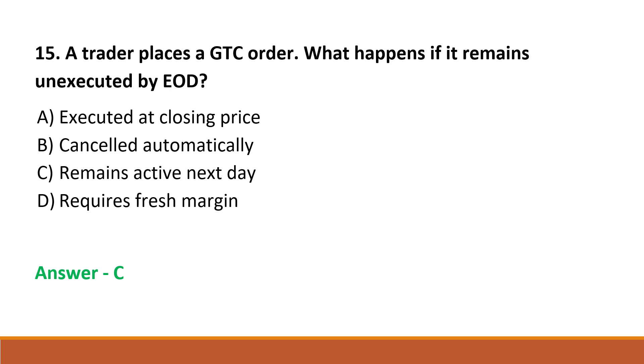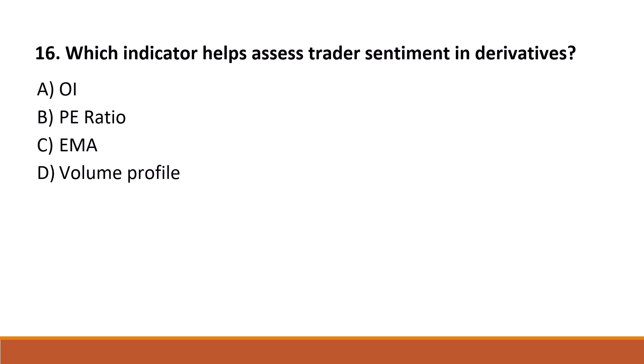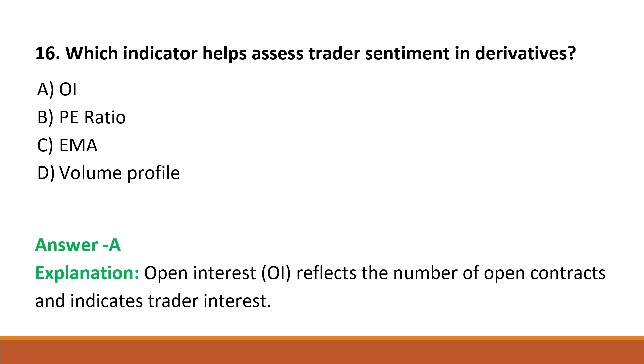Next question: which of the following indicators helps assess trader sentiment in derivatives? Option A: OI. Option B: PE ratio. Option C: EMA. Option D: volume profile. The correct answer is Option A, OI (Open Interest). Open interest reflects the number of open contracts and indicates trader interest.